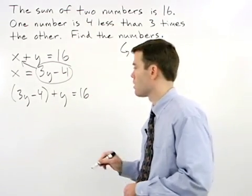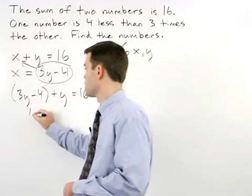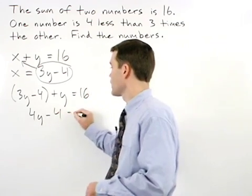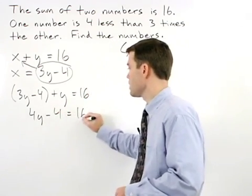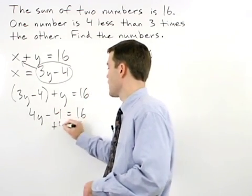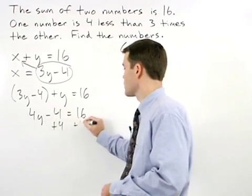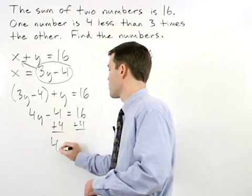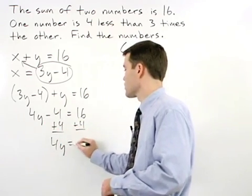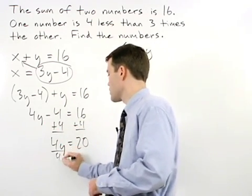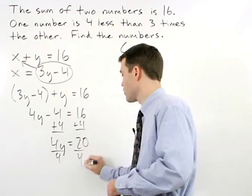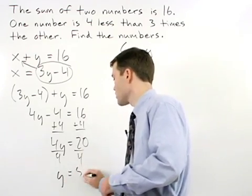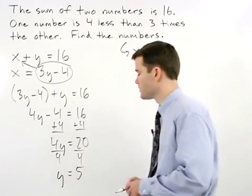And solving from here, 4y minus 4 equals 16. Add 4 to both sides: 4y equals 20. Divide both sides by 4, and y equals 5.